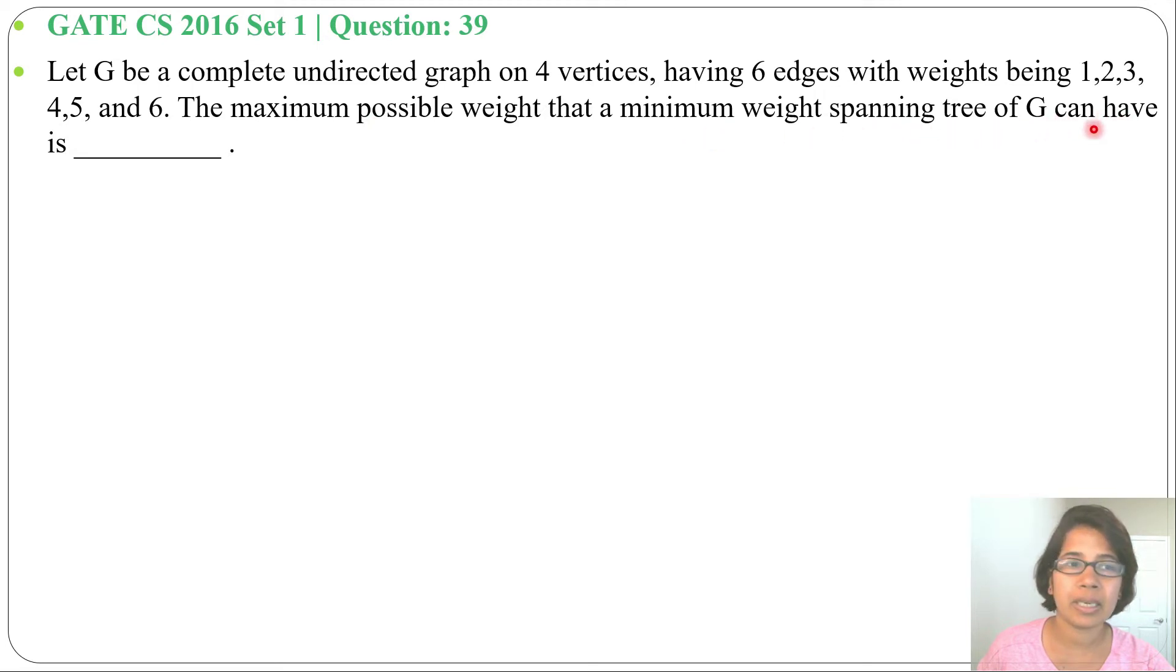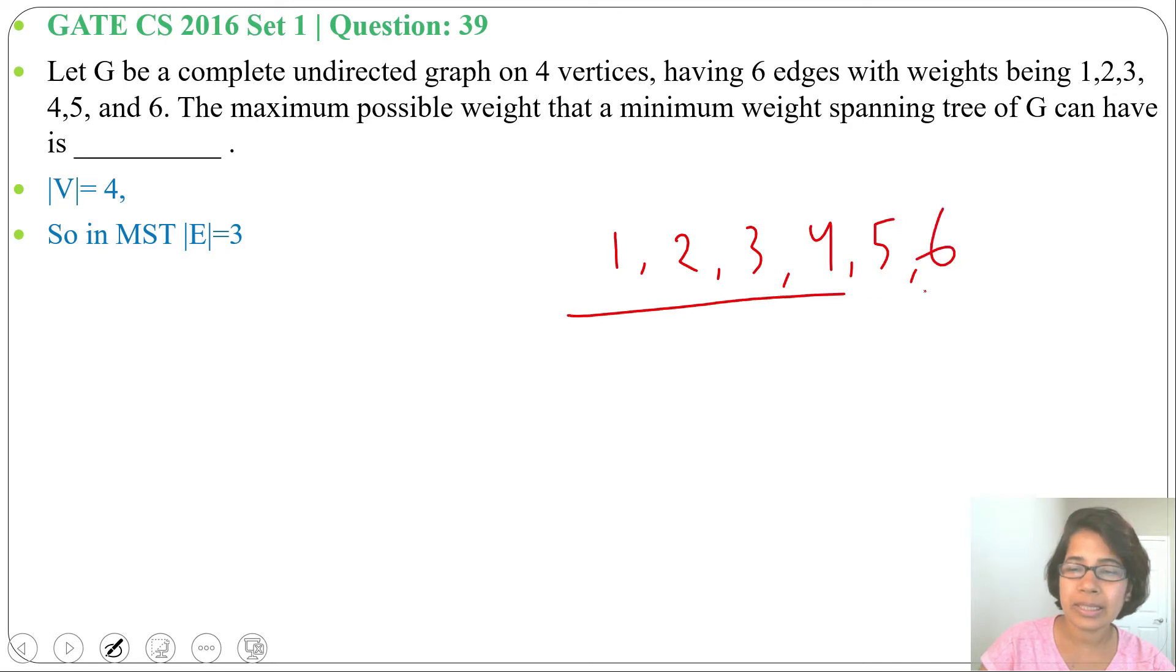The number of vertices given is 4 and number of edges are 6. In minimum spanning tree, if number of vertices equals 4, then number of edges will be 3. This means from those edges 1, 2, 3, 4, 5, 6, we'll choose just 3 edges. Suppose we'll use the Kruskal algorithm.